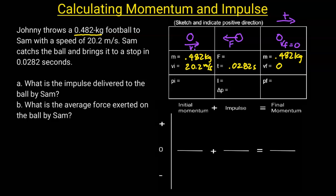Next, I'm going to fill out my chart. The first thing I calculate is the initial momentum: 0.482 times 20.2, and I get 9.74. I'm also going to calculate my final momentum, which is going to be 0 because the ball is not moving.